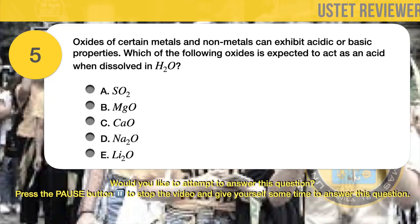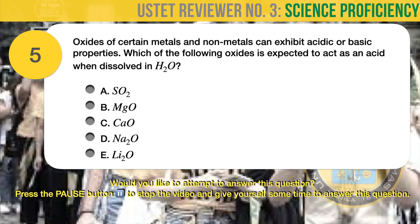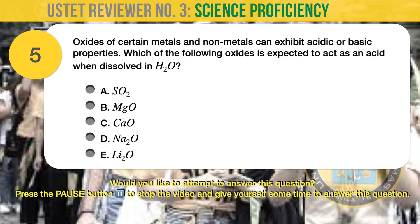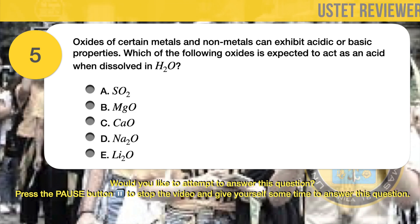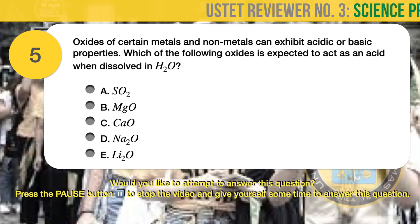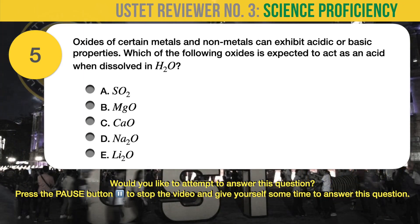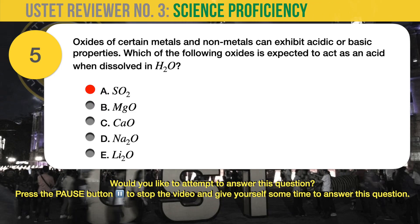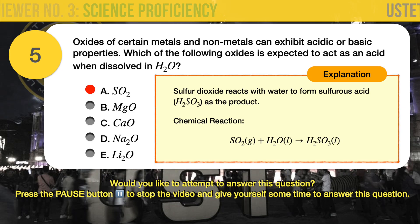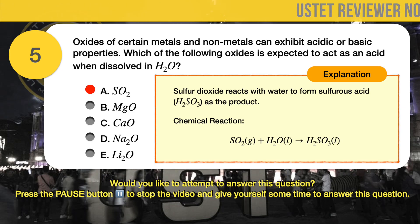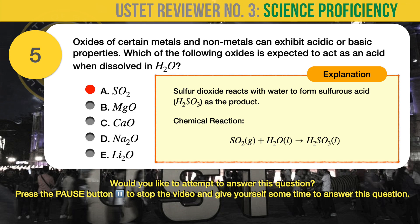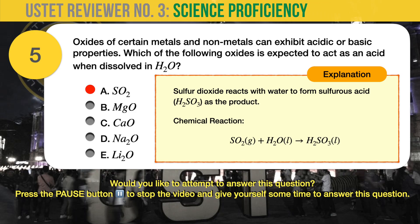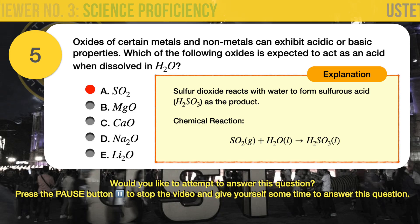Question number 5. Chemistry. Oxides of certain metals and non-metals can exhibit acidic or basic properties. Which of the following oxides is expected to act as an acid when dissolved in H2O? A. Sulfur dioxide, SO2. B. Magnesium oxide, MgO. C. Calcium oxide, CaO. D. Sodium oxide, Na2O. E. Lithium oxide, Li2O. The correct answer is A, SO2 or sulfur dioxide. Sulfur dioxide is also known as sulfurous anhydride, sulfurous acid anhydride, or sulfur oxide. It is an easily liquefiable colorless gas with a pungent smell. Sulfur dioxide reacts with water to form sulfurous acid, H2SO3, as the product.